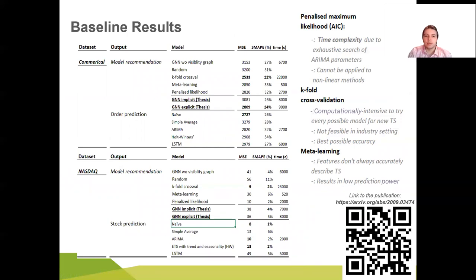Given those two datasets we have run their experiments and we have come up with the following results. We compared basically against two main baselines, model recommendation and order prediction. K-fold cross-validation, meta-learning and penalized likelihood serve as the model recommendation baselines. And optimal hyperparameters were selected via cross-validation on the same parameter grid. Based on the results we can conclude following properties. On all datasets GNN with explicit relationships performed slightly better than GNN with implicit relationship at the cost of increased computational time. Therefore the usage of explicit relationships is preferable.